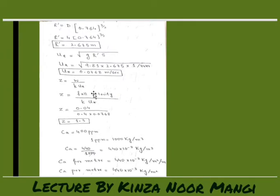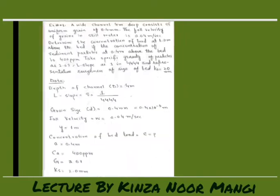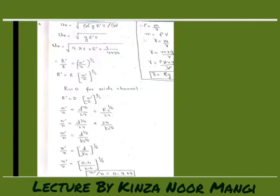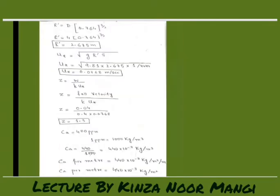Now we will calculate this constant Z, that is the ratio of fall velocity to Karman's constant times the shear velocity. Fall velocity is 0.04 meter per second, shear velocity we have already calculated, and Karman's constant is 2.0 millimeter. So here we have substituted these values, then we have got that Z equals 1.3.